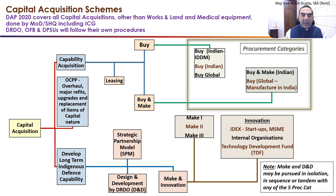Previously, Capital Budget used to be spent through revenue procedure. However, there was no policy dictated in DAP or the DPP 2016, erstwhile the Defense Acquisition Procurement Policy document. Now, Capability Acquisition is divided into three schemes.